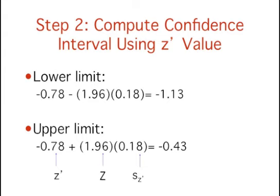We can now complete step 2 and compute the confidence interval with the Z' value. To compute the lower limit, take the Z' value minus 1.96 multiplied by 0.18 to get negative 1.13.